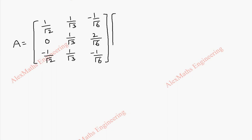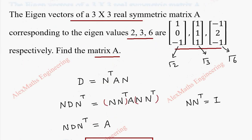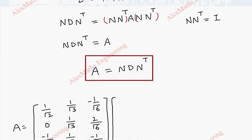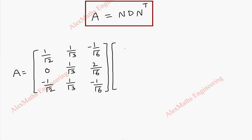Next is D. The diagonal matrix is formed using the eigenvalues 2, 3, 6 in the leading diagonal. So, it is 2, 3, 6, and the rest of the elements are 0.